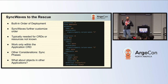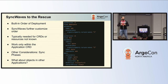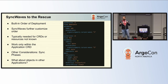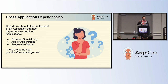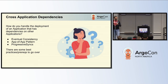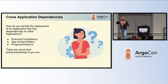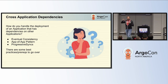The key question is: if I have resources in one application that depend on resources being deployed in another application — which is very common with microservices — what can I do? That's the point of this talk: cross-application dependencies. How do you handle deployment of applications that have dependencies on other applications? From working with the community, clients, and customers, there are really three main patterns: the first is eventual consistency, the second is the app of apps pattern, and the third is progressive syncs.